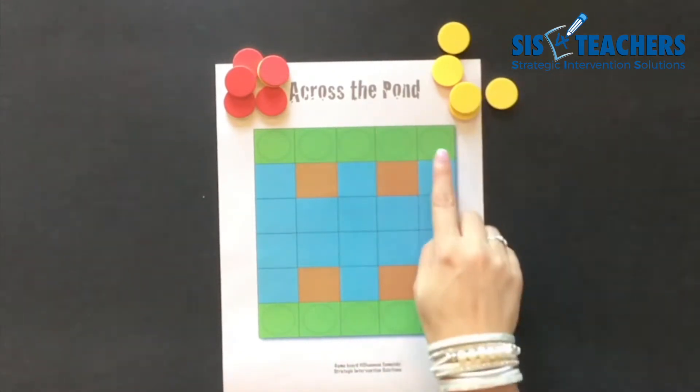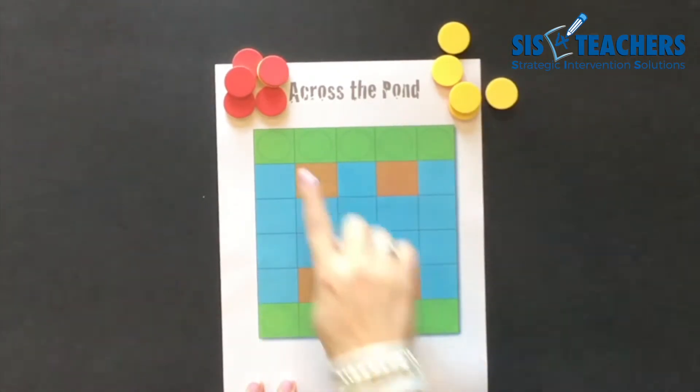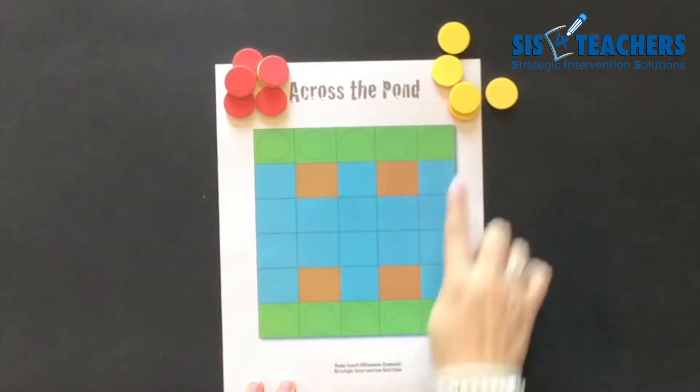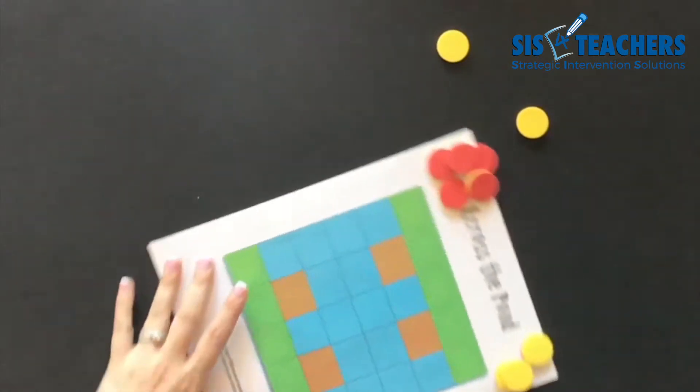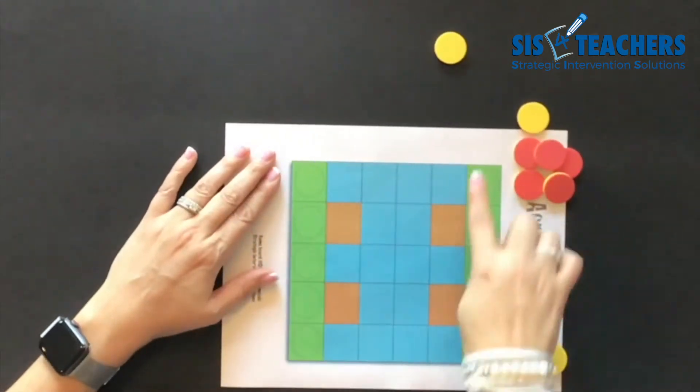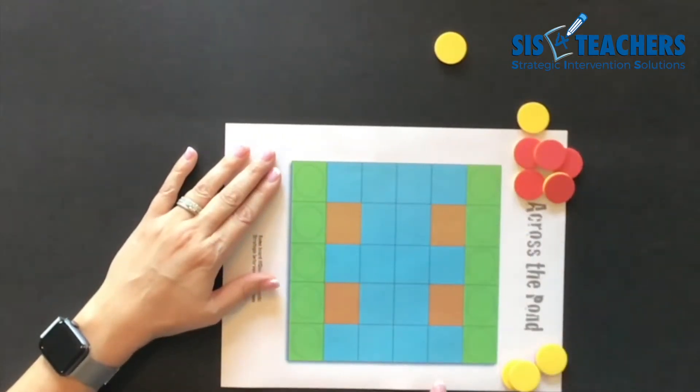This game is called Across the Pond. As we look at the game board, each person has five lily pads that they can go off of. I like to play this game across from my partner so that we can see our lily pads and have it from the same vantage point.